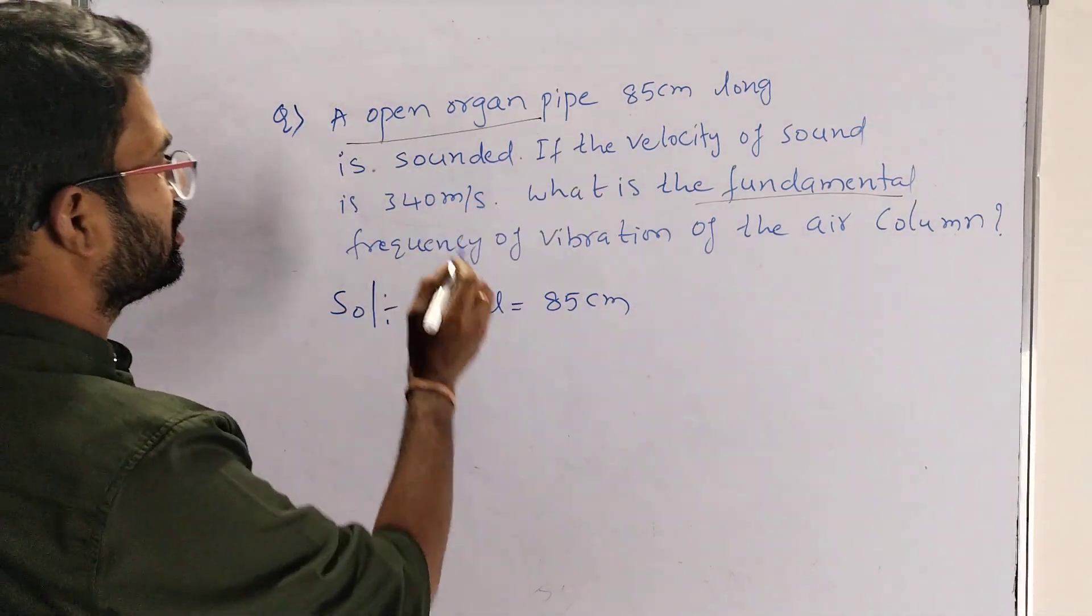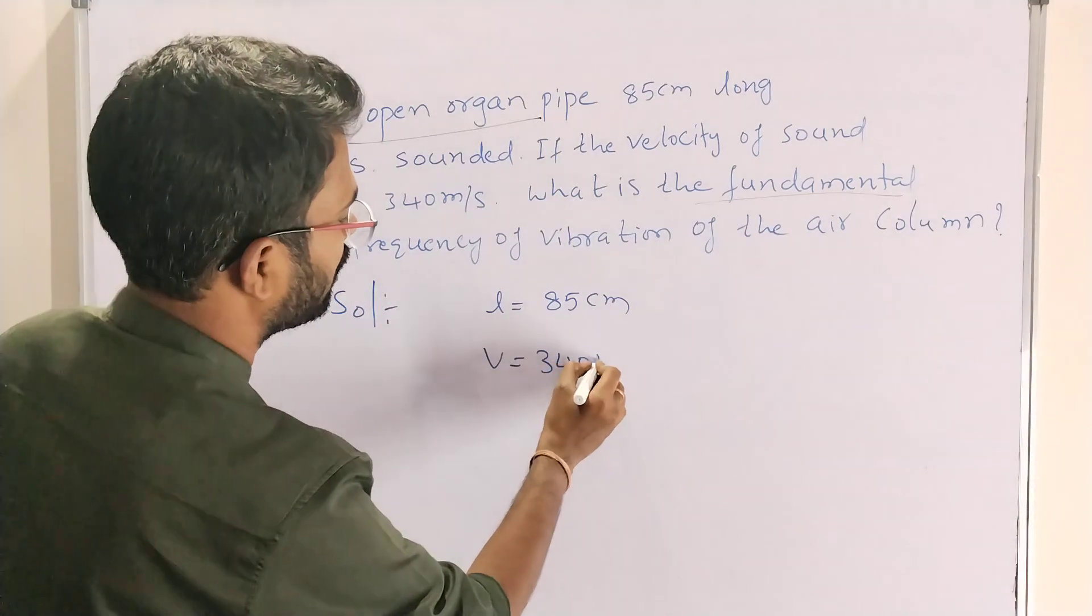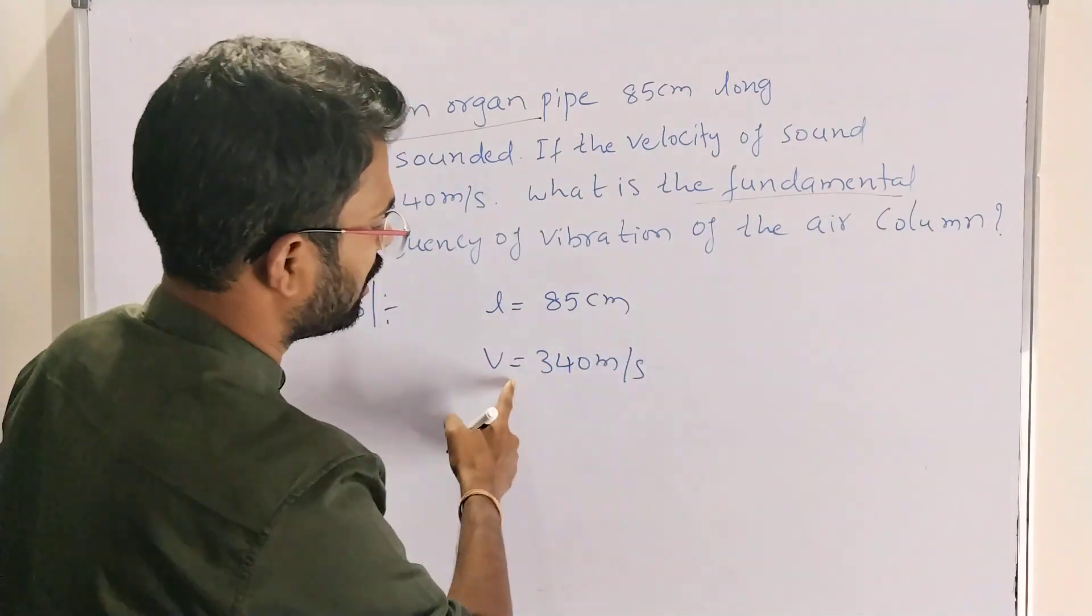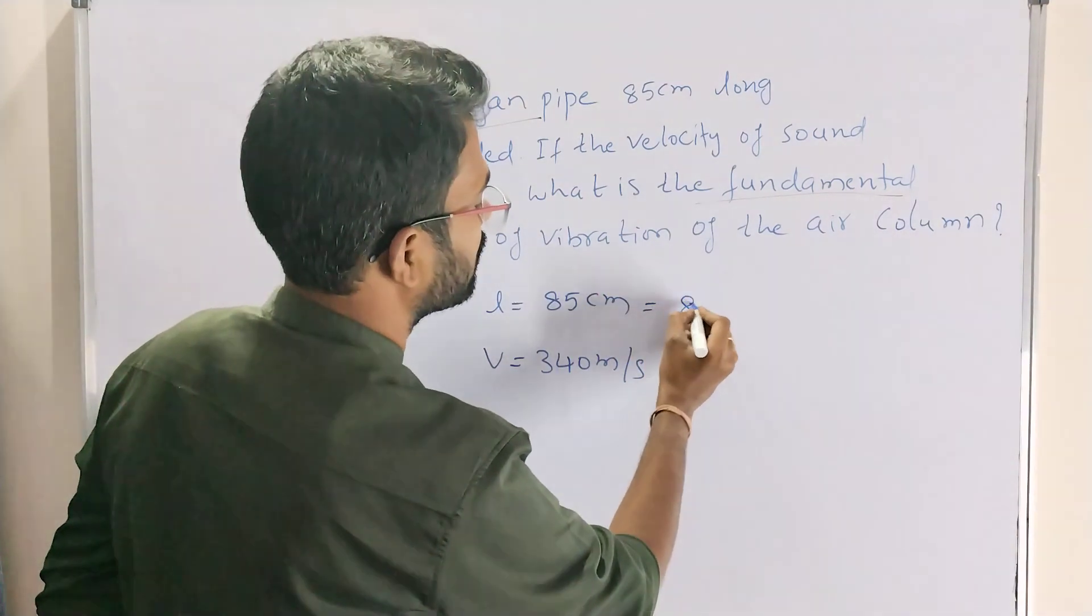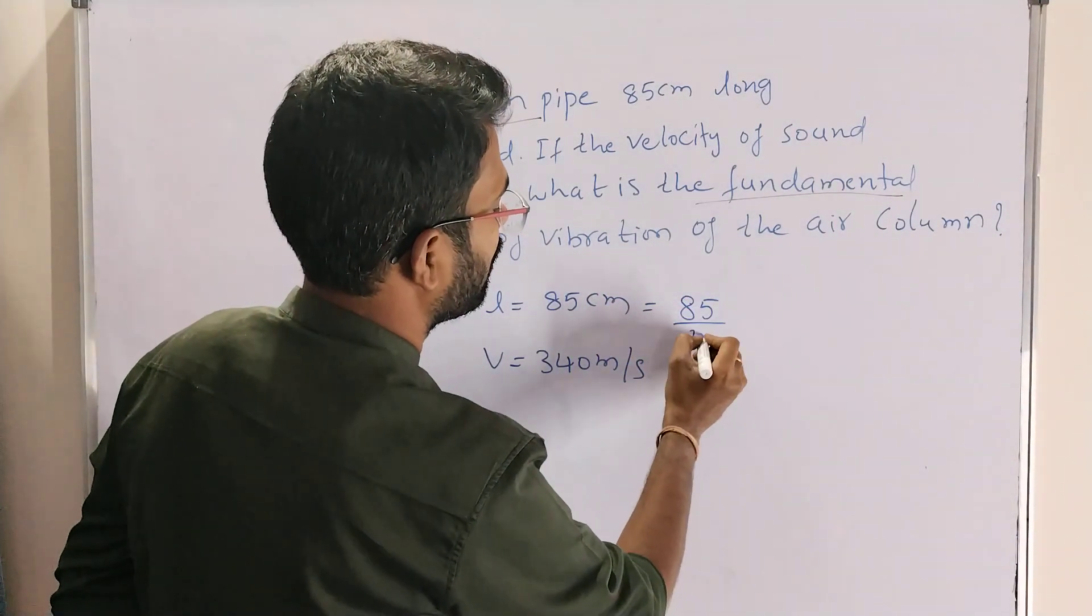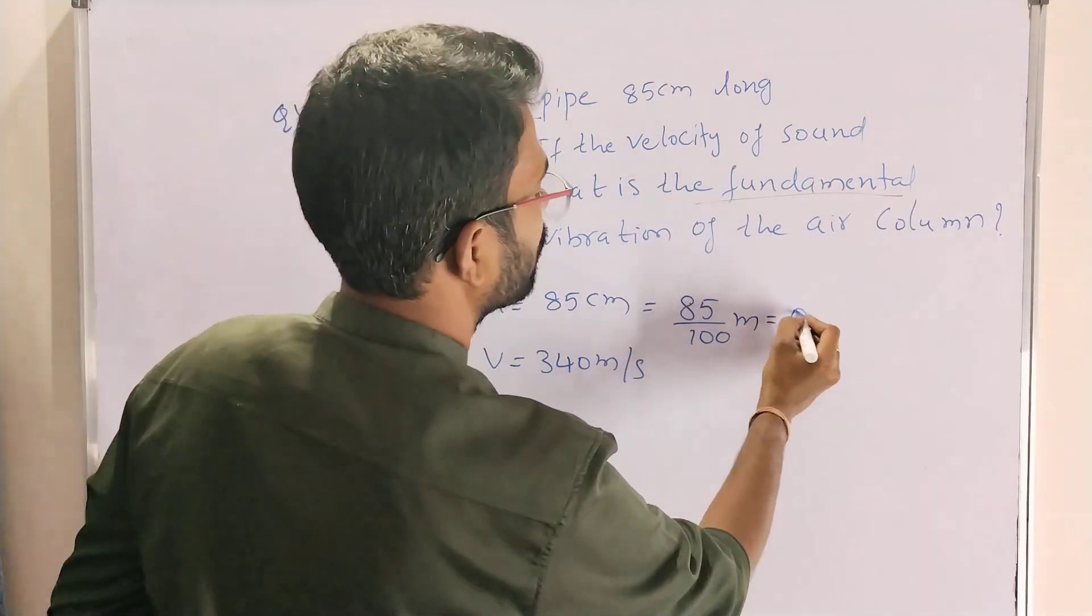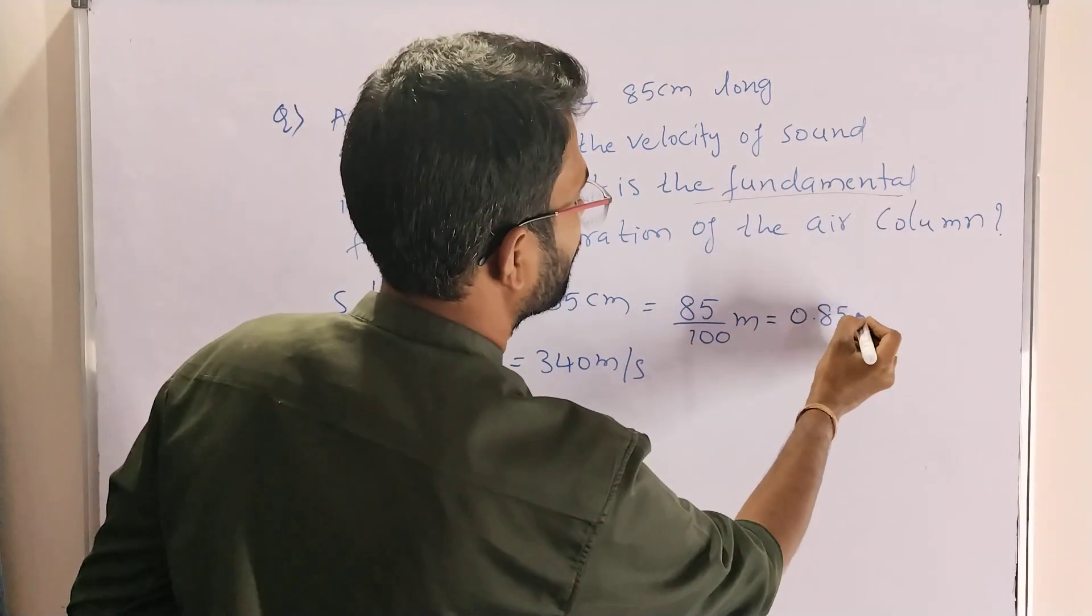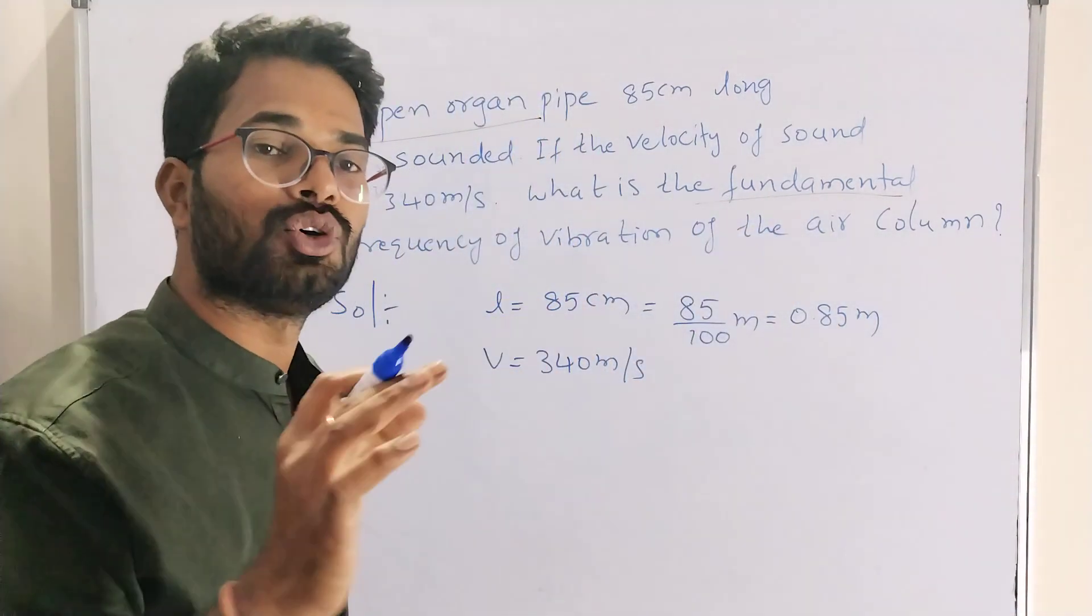Next, velocity of sound V equals 340 meters per second. Velocity is in meters per second, so we have to change centimeters into meters. 85 by 100 meters equals 0.85 meters.